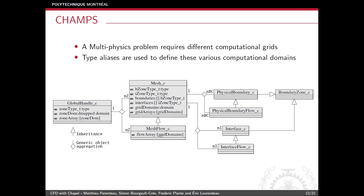We do the same for boundary conditions, using type aliases to define two types of boundaries: physical boundaries and interface boundaries for communication. If a MeshFlow is used for a flow simulation, the correct types are instantiated — InterfaceFlow and PhysicalBoundaryFlow — because different physical models require different boundary conditions. This flexible structure can be reused for any physical model and will eventually allow combining different models for multi-physics simulation.